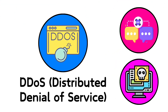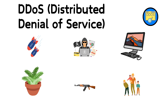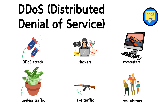1. DDoS — Distributed Denial of Service. Imagine you're trying to get into your favorite ice cream shop, but a huge crowd of people is blocking the door and won't let anyone enter. This is what a DDoS attack is like. Hackers use many computers across the internet to send a ton of useless traffic to a website or service. Because the website is too busy dealing with this fake traffic, it can't handle real visitors, causing it to slow down or completely stop working.